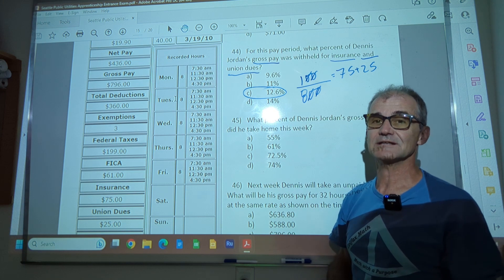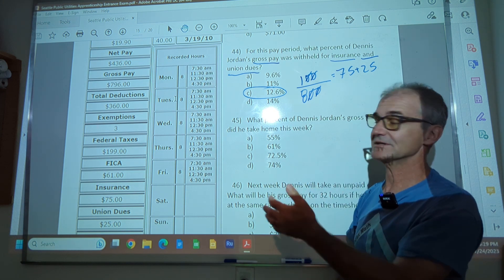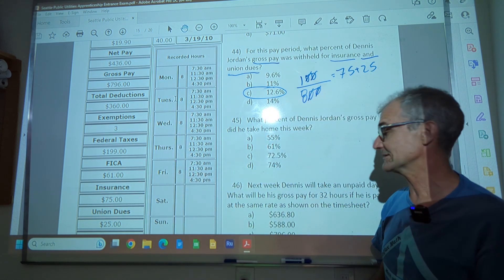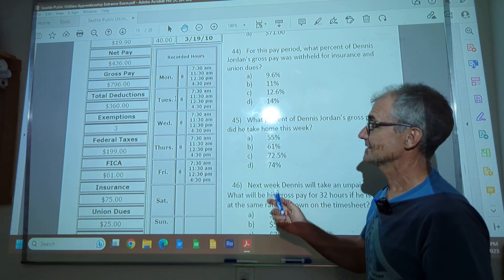Again, this is a no calculator test. So there's got to be a trick. I mean, you know, these two things are going to add up to pretty easy numbers. So you can do it pretty quickly in your head. Okay. Number 45.